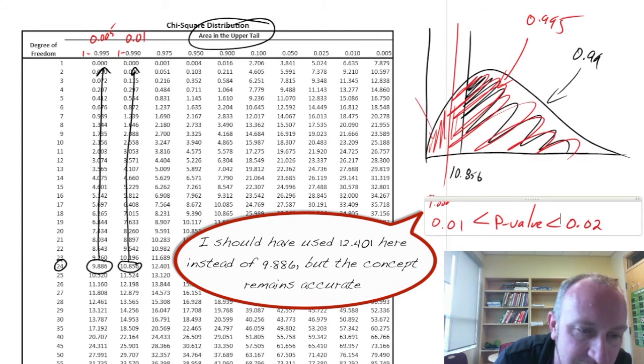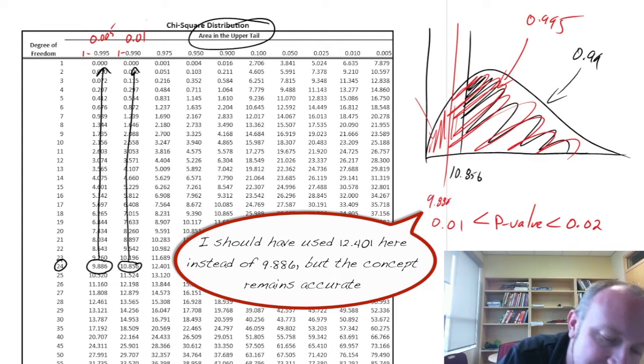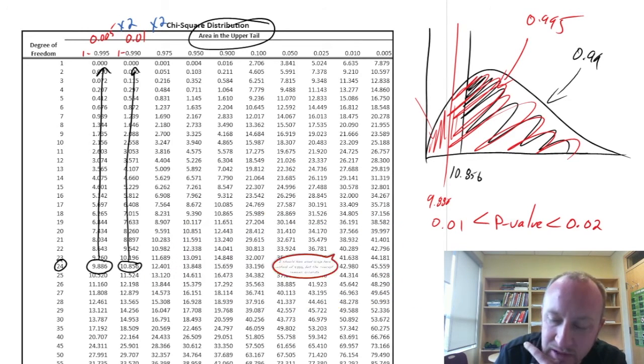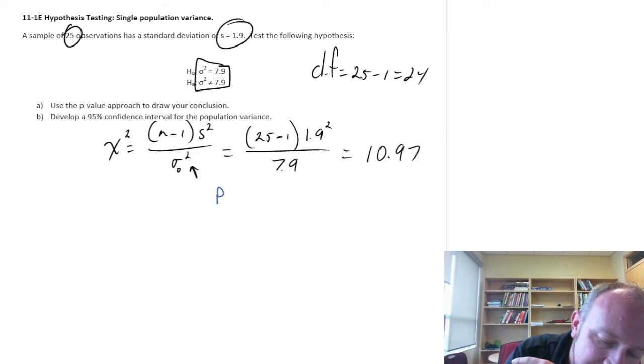So this is going to be something less than 0.02 and greater than 0.01. So I'm multiplying each of these. This is multiply by 2 and multiply this by 2. And that gives us our range of the p-values. So I'll come back to our problem. Our p-value is between 0.02 and 0.01.